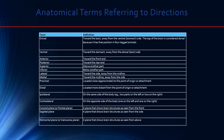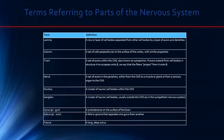There are different terms for different parts of the nervous system. Lamina are a row or layer of cell bodies separated from other cell bodies by a layer of axons and dendrites. A column is a set of cells perpendicular to the surface of the cortex with similar properties — for example, ocular dominance columns in the visual system. A tract is a set of axons within the central nervous system, also known as a projection — axons project from structure A to synapses on B, such as the optic nerve tract. A nerve is a set of axons in the periphery, such as the optic nerve, auditory nerve, or vestibulocochlear nerve.